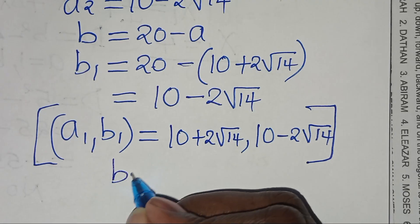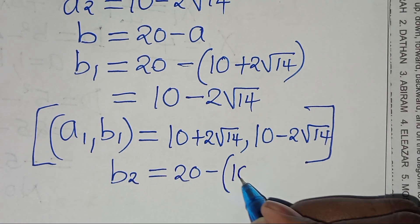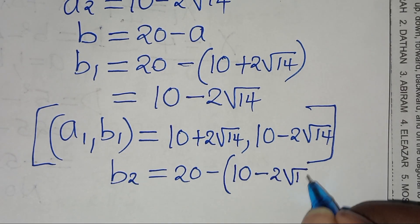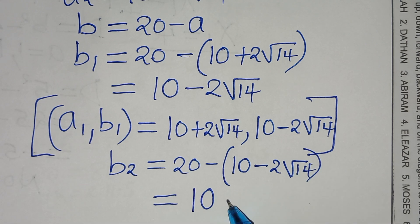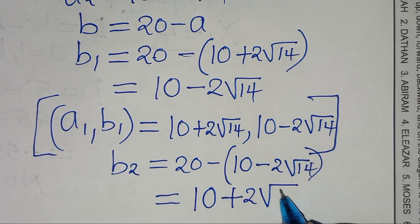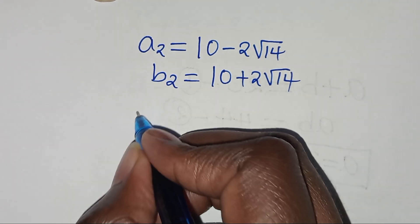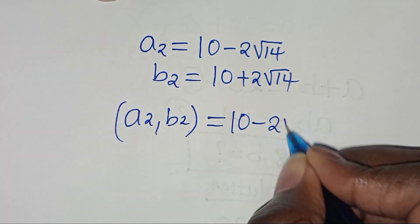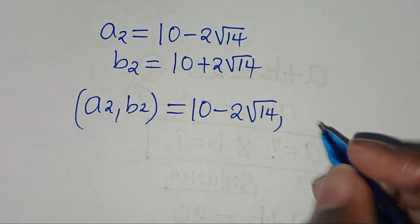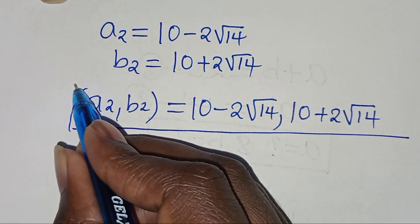Let's proceed to solve B2. B2 equals 20 minus A2, where A2 is 10 minus 2 square root of 14. So 20 minus 10 is 10, minus times minus 2 square root of 14 becomes plus 2 square root of 14. So B2 is 10 plus 2 square root of 14. The second set of solutions is: A2, B2 = (10 − 2√14, 10 + 2√14).